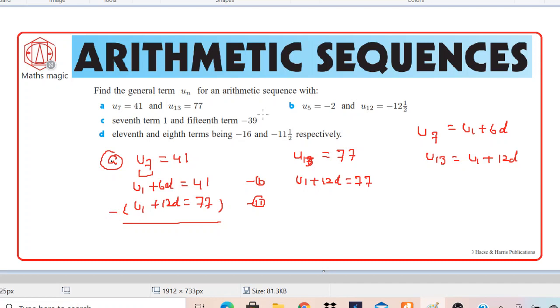So we will subtract this. If you subtract, you have to change the sign. So this is going to be negative, this is negative, and this is negative. U1 gets cancelled out. Now if you have 6D and minus 12D, this becomes minus 6D. And then you are having 41 minus 77, so you will have negative 36. Then you can cancel this negative negative, and then you can find D equals 36 over 6, which is 6 only. So we found D equals 6.